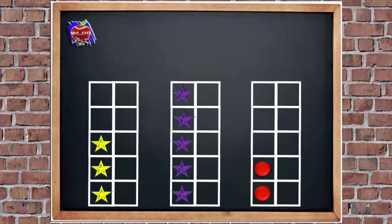So how many yellow stars are there? Yeah, there's three. Excellent. How many purple stars are there? Yeah, five, because it's half of our 10s frame. And it's a five frame, isn't it? Well done. How many red circles are there? Yeah, there's two. Excellent.